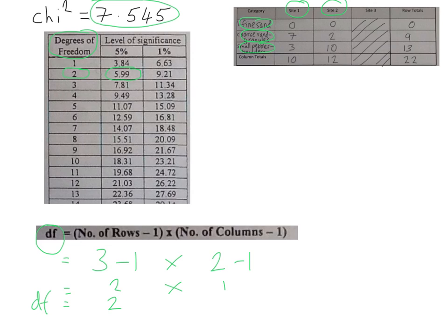If our chi squared answer is more than this value here, the 5% significance value, we can be 95% sure that our result is not due to chance. And that means we can reject our null hypothesis. Now, unfortunately, our result is not greater than this number here, which would have given us a 99% confidence level. But it doesn't matter. We can still be 95% certain. And therefore, we can reject our null hypothesis.